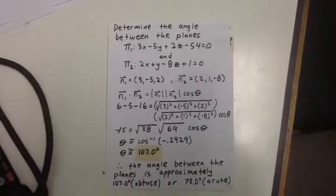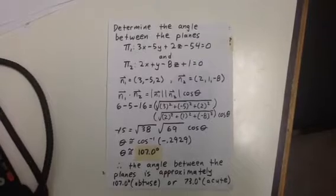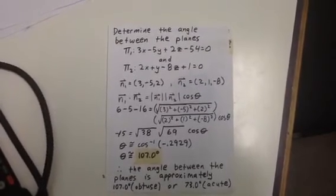In this question we want to get the angle between the planes 3x minus 5y plus 2z minus 54 equals 0 and 2x plus y minus 8z plus 1 equals 0.